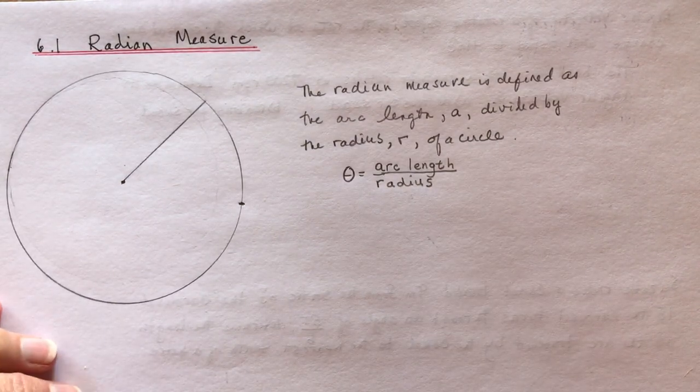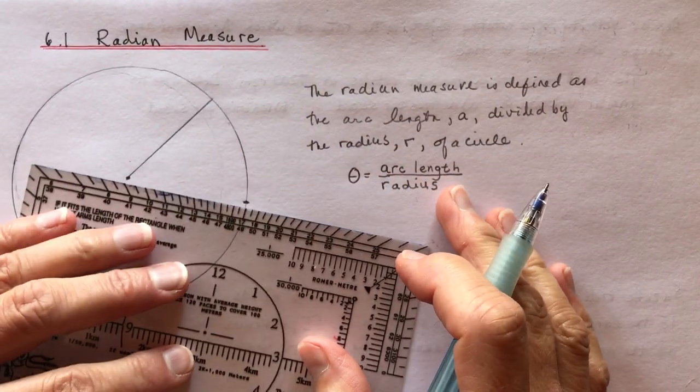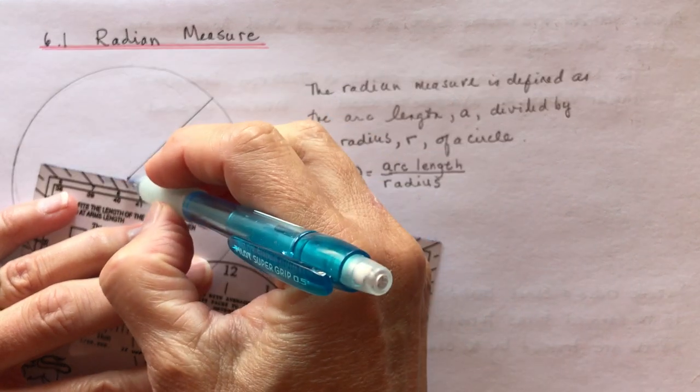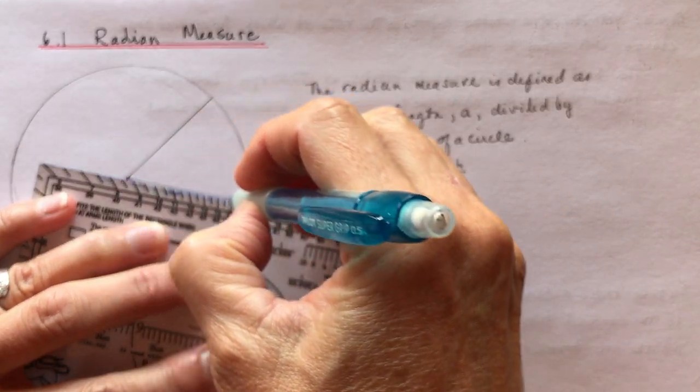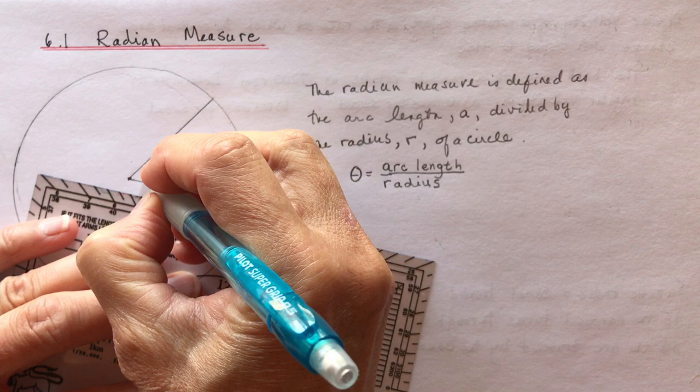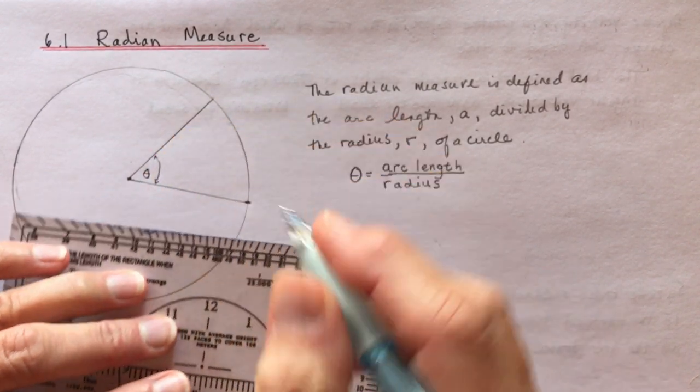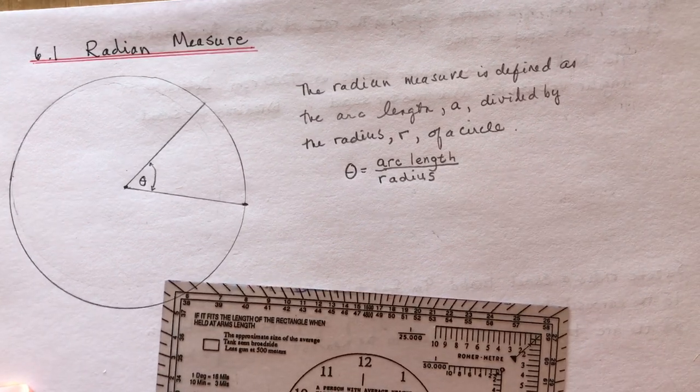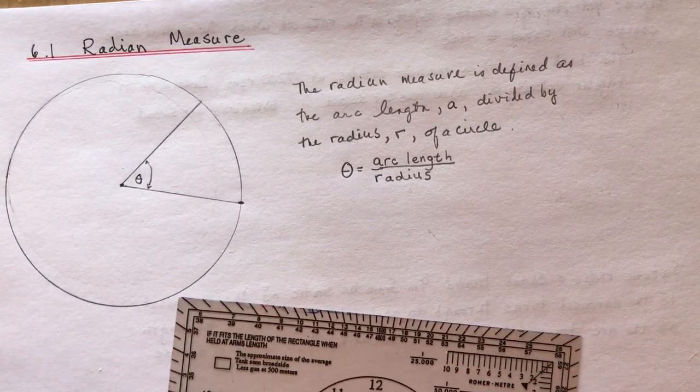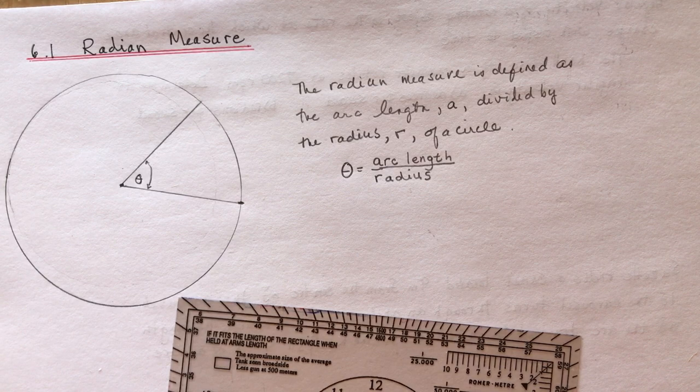Then you join that line to the center of your circle. And that angle in here is 1 radian. I usually get the students to measure that as best as they can with a protractor.